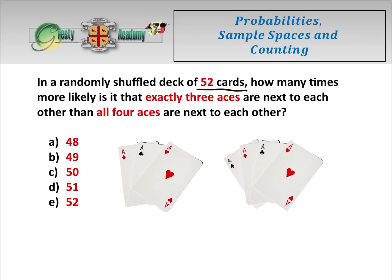So we have 52 cards and we want to know how many times more likely is it that we get exactly three aces next to each other in the randomly shuffled deck than all four aces next to each other. Is it 48 times, 49 times, 50 times, 51 times, or 52 times more likely? So let's have a look.